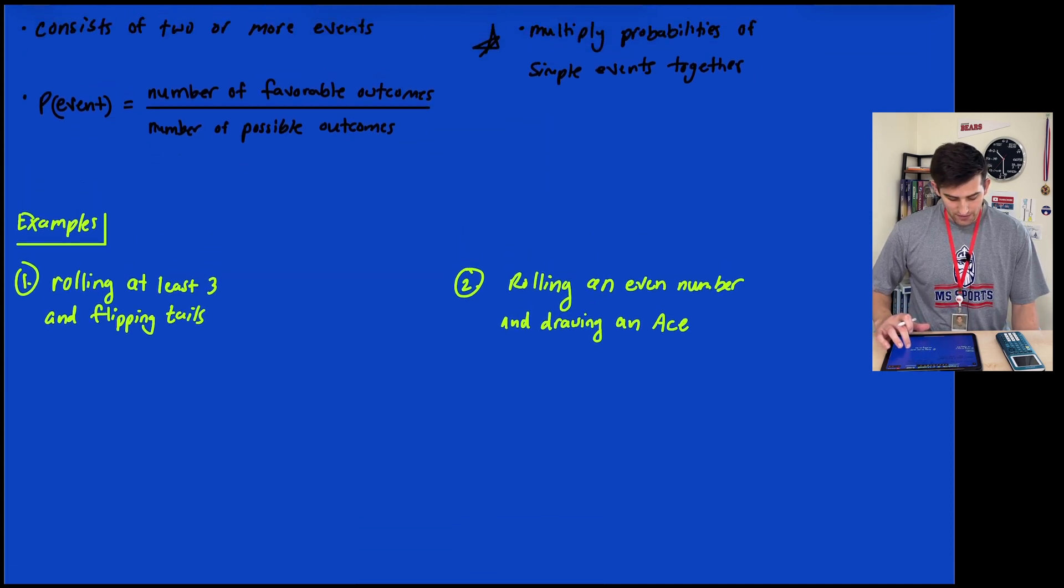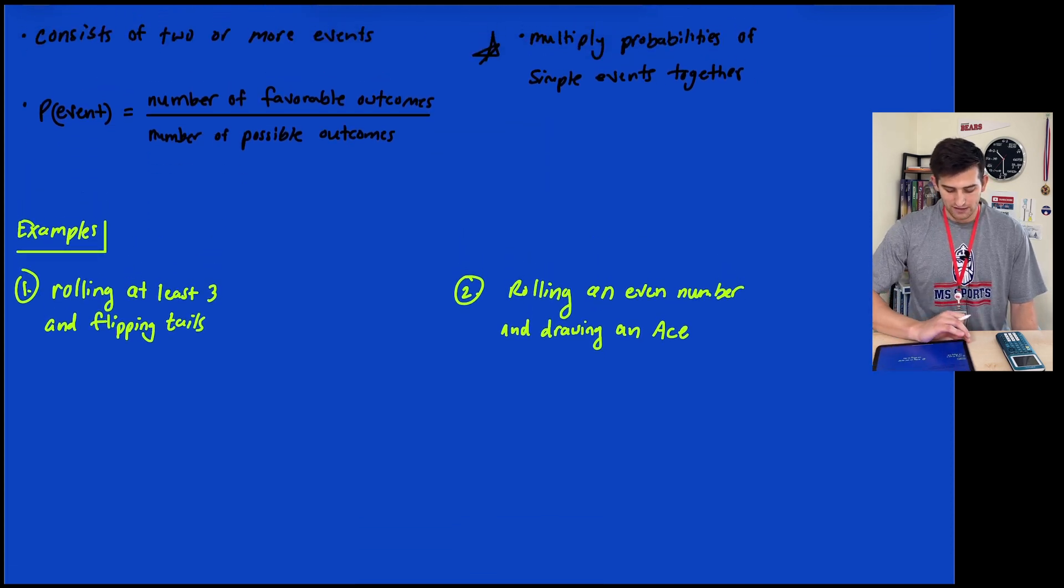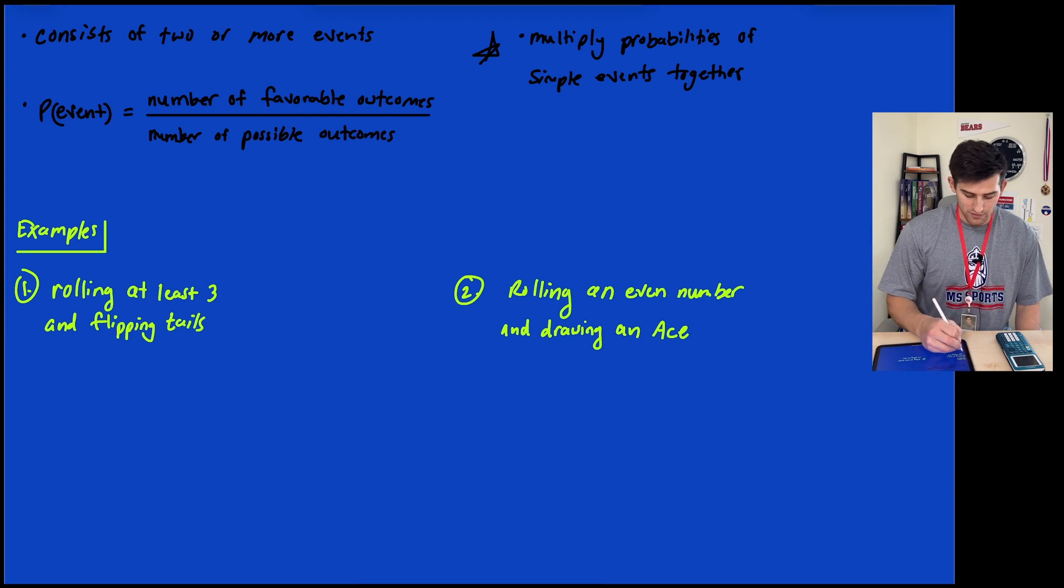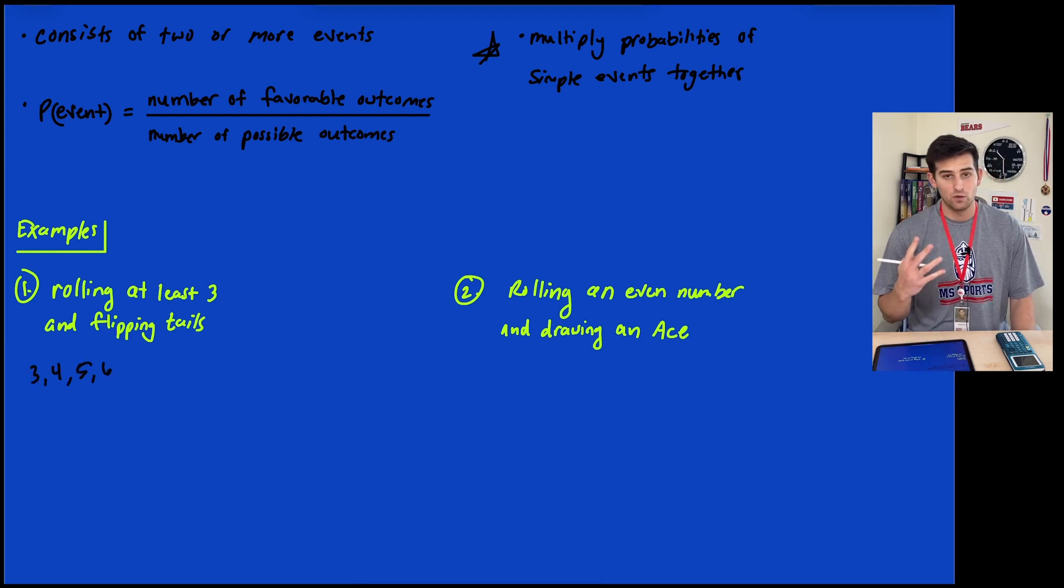Let's look at example number one: rolling at least a 3 and flipping tails. When rolling a die with six sides numbered 1 through 6, rolling at least a 3 means the favorable outcomes are 3, 4, 5, and 6. That's four favorable outcomes out of six possibilities, so 4/6.